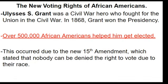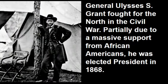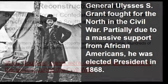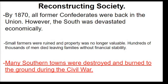Johnson was only in office for a short period. In 1868, war hero Ulysses S. Grant wins the presidency, favored by almost all of the North and all the new African Americans who are now free to vote — over half a million African Americans helped get him elected. Reconstruction is still ongoing, and by 1870 all former Confederates were back in the Union. But the South is ruined economically — small farmers were ruined, property was no longer valuable, and hundreds of thousands of men died leaving families without financial stability.